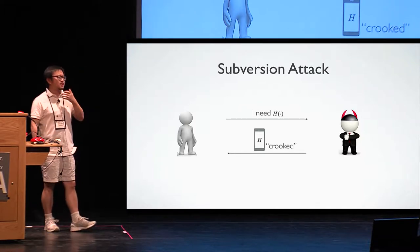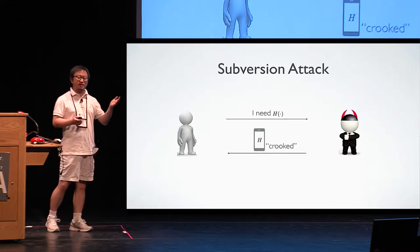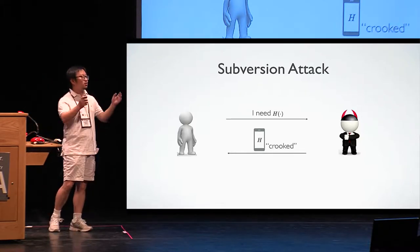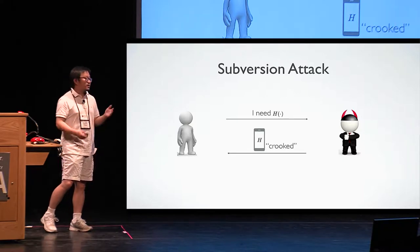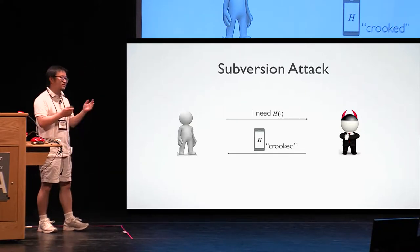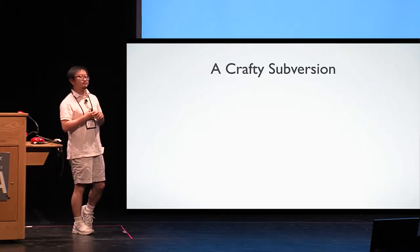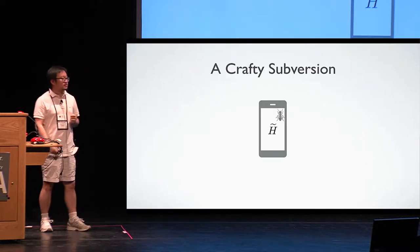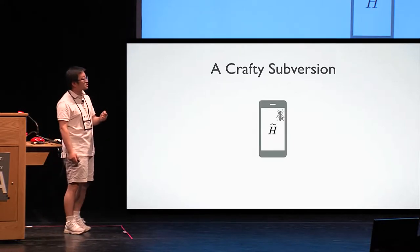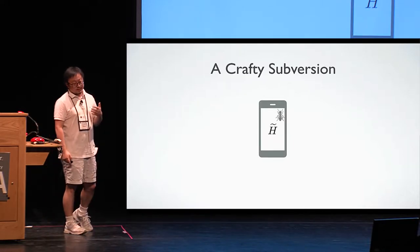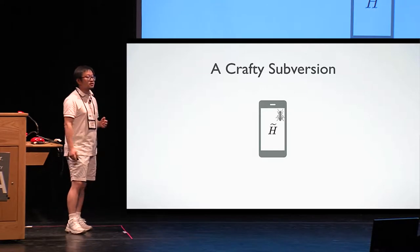The implementation provider here is considered as an attacker. So he will send back a real implementation, but which could be potentially subverted. And sometimes we call it crooked according to whoever's standard. Obviously, if the subversion is done arbitrarily, say the hash implementation actually just outputs all zero or all one, it's very easy for the user to notice something is wrong.